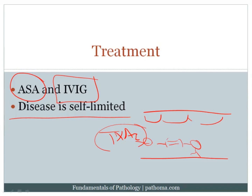A mnemonic for Kawasaki's disease: picture a four-year-old sitting on a Kawasaki motorcycle, using their palms and soles — helping you remember the rash on palms and soles. And of course, your heart rate really goes up on a motorcycle, reminding you that Kawasaki's preferentially involves the coronary artery. This is a very high-yield disease, in particular the treatment and the fact that you would give aspirin to such a patient.